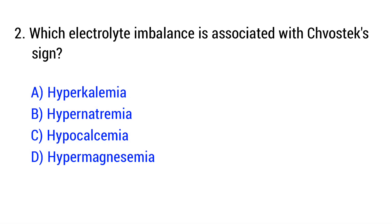Question number 2. Which electrolyte imbalance is associated with Chvostek's sign? The right answer is option C: Hypokalcemia.